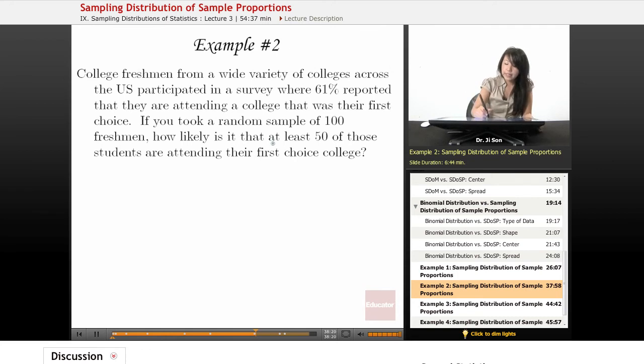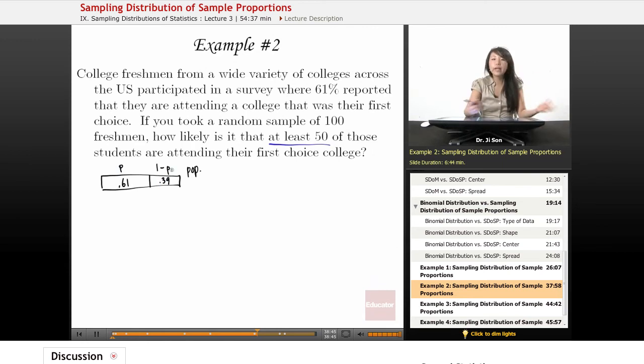So it's saying at least 50, so that's a good thing to keep in mind for later. But let's draw this population. So here's my population of college freshmen. And 61%, so not quite half, but a little more than half. So 61%, that's our P. And 1 minus P is not quite 40%, but it's 39. So the other 39, they're not attending their first choice college.